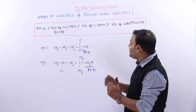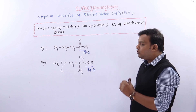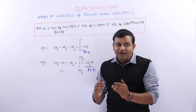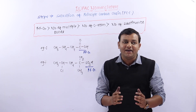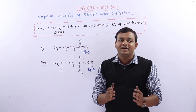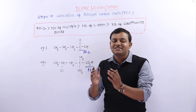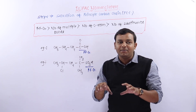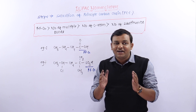One point here is that if our principal functional group carbon is containing the principal carbon chain, then the carbon chain starts from that carbon — it means that carbon is a terminal.